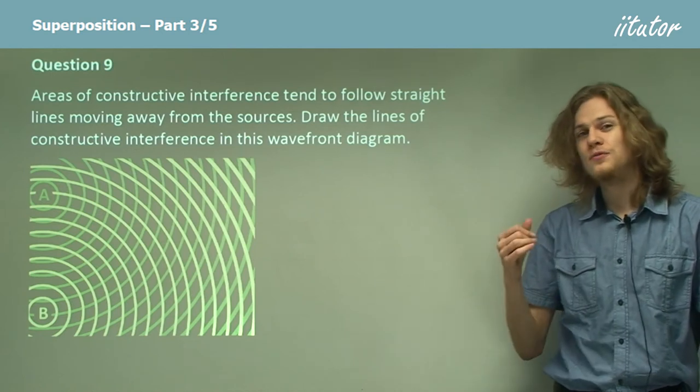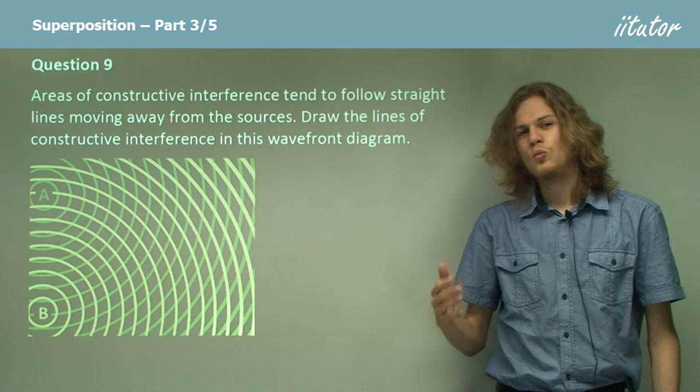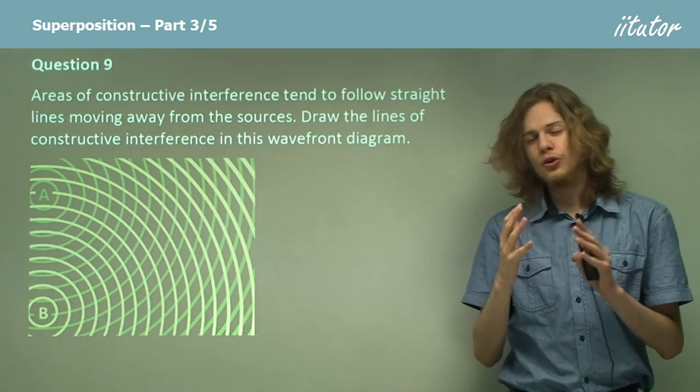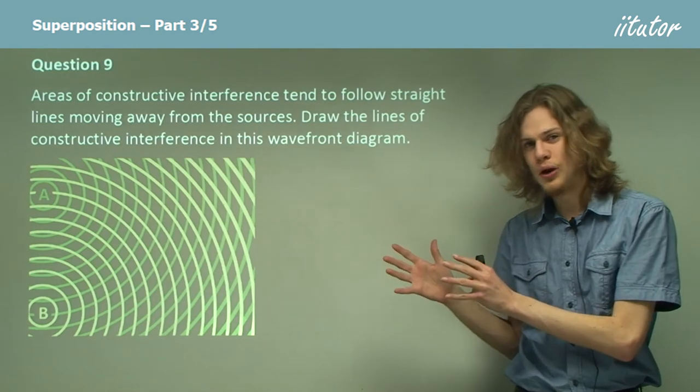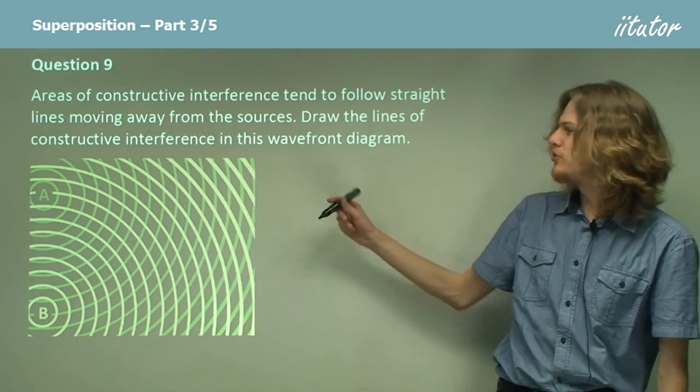So all we need to do is find a line of little crosses where the crest of one source of waves crosses over with the crest of the other source of waves. So we can see little crosses all through this diagram.